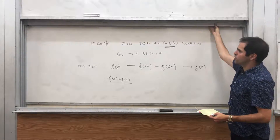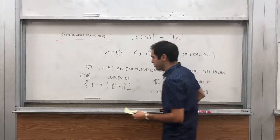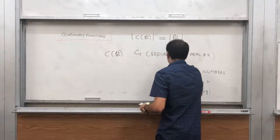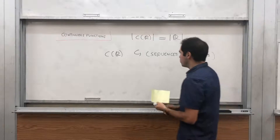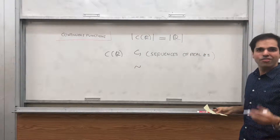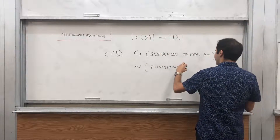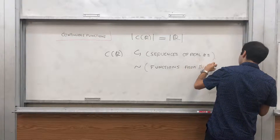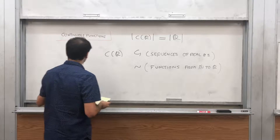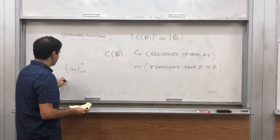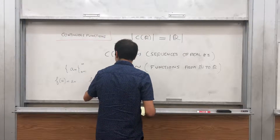So in other words, we've shown there is a one-to-one map from continuous functions to sequences of real numbers. Now we want to show this somehow gives you the cardinality of ℝ. What is a sequence? It's really just a function from the natural numbers to the real numbers. So the set of sequences of real numbers has the same cardinality as the functions from ℕ to ℝ, because given a sequence a_n you can just define f(n) = a_n, and each one is a real number.